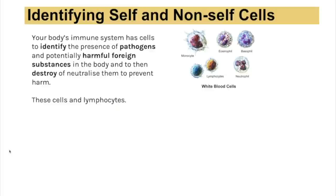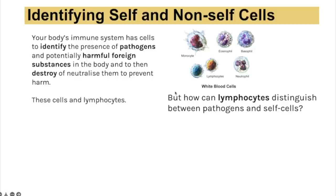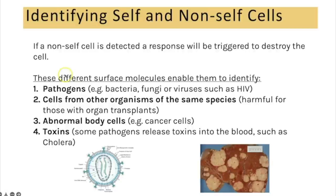The last section of topic two covers immunity, beginning with identifying self and non-self cells. The immune system has cells that can identify the presence of pathogens and harmful foreign substances compared to your own body cells, in order to destroy foreign items without harming your own cells. These cells are called lymphocytes. Each cell type has specific molecules (usually proteins with a unique 3D tertiary structure) on its surface to identify it as self or non-self. If a non-self cell is detected, a response is triggered to destroy it.